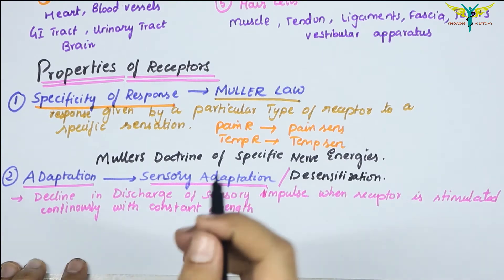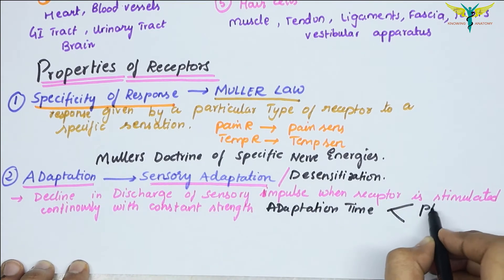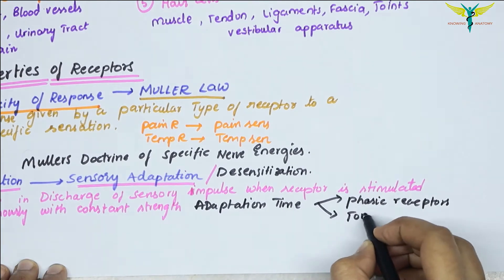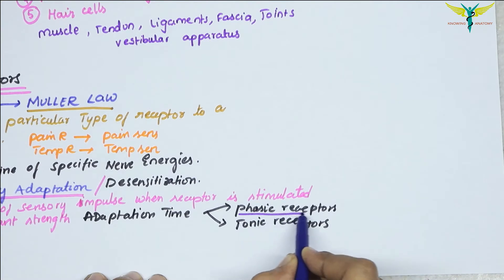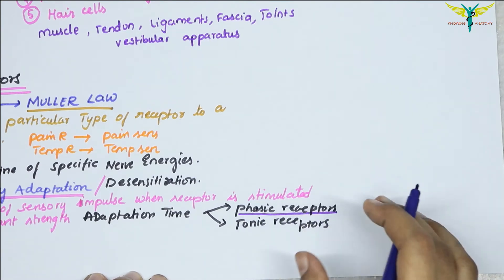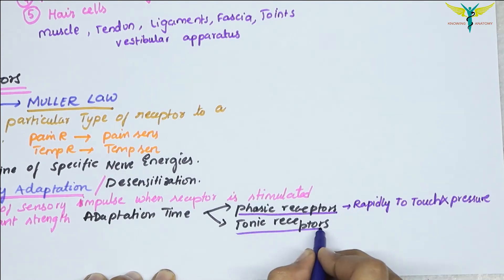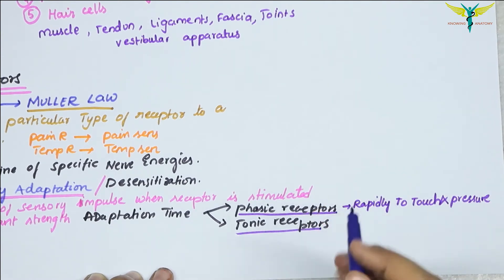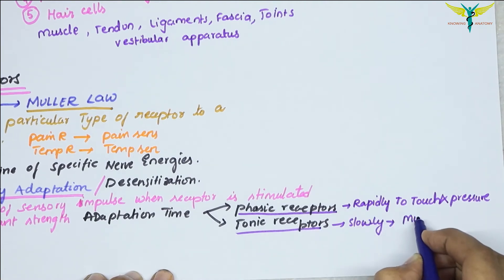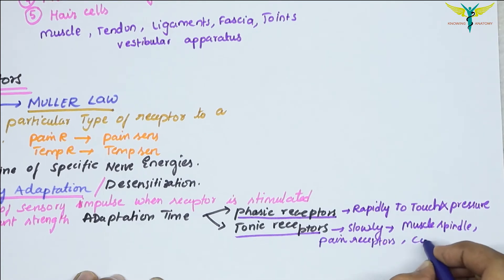Depending upon the adaptation time, receptors are further divided into two types: phasic receptors and tonic receptors. Phasic receptors are those which get adapted rapidly — examples are touch and pressure receptors. Tonic receptors are those which adapt slowly — examples are muscle spindle, pain receptors, and cold receptors.